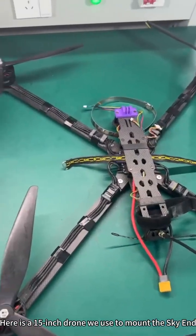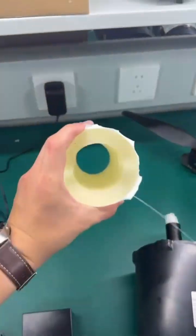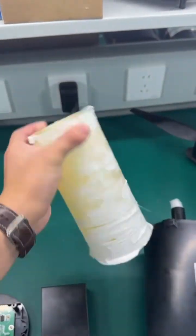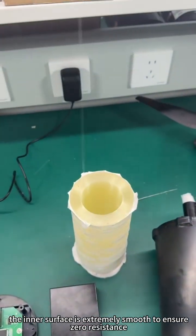Here is a 15-inch drone we use to mount the sky end. This is our fiber spool. The inner surface is extremely smooth to ensure zero resistance.